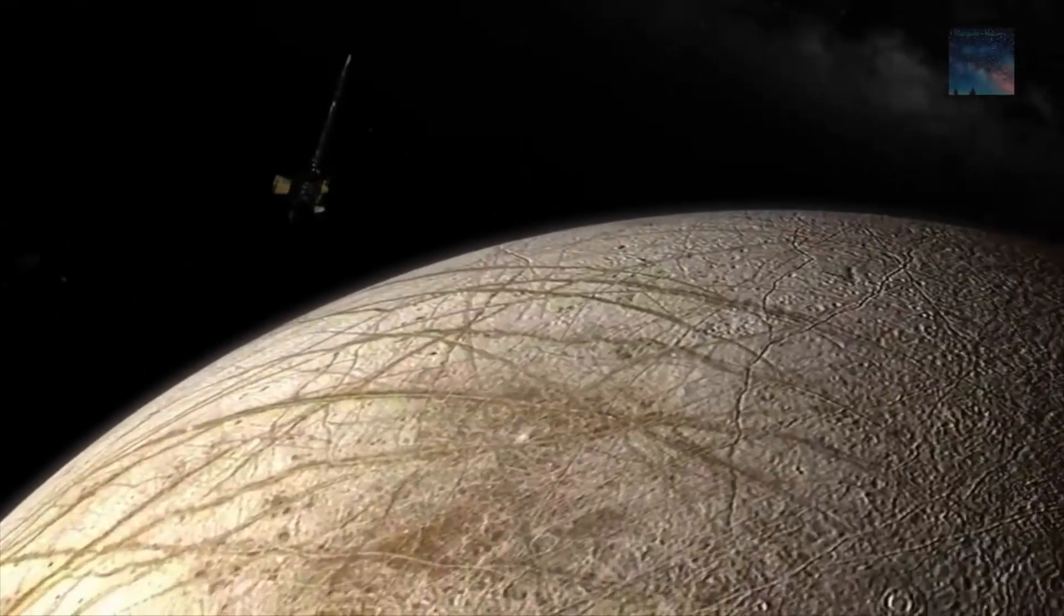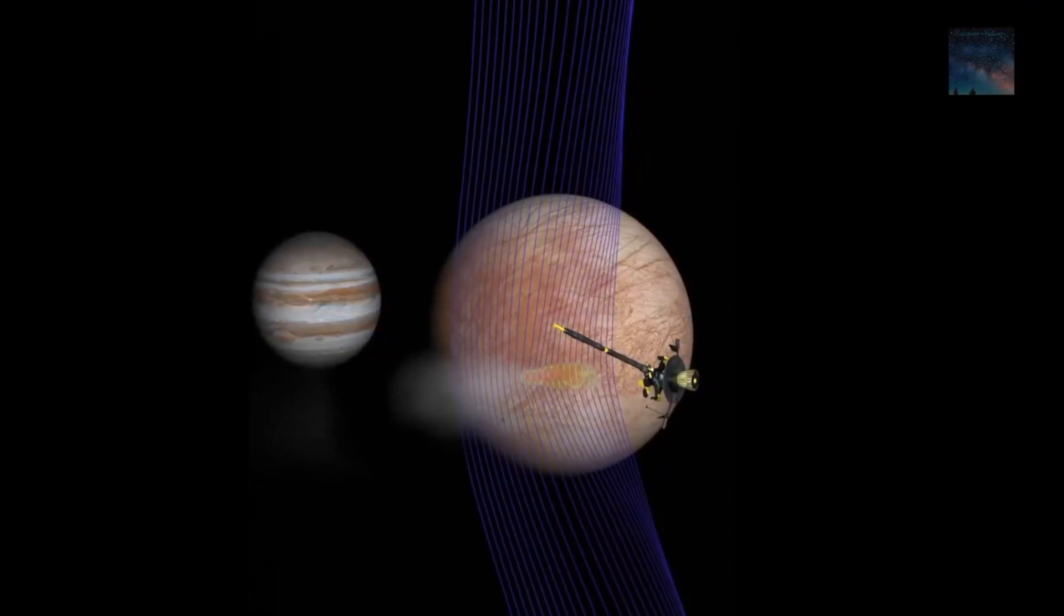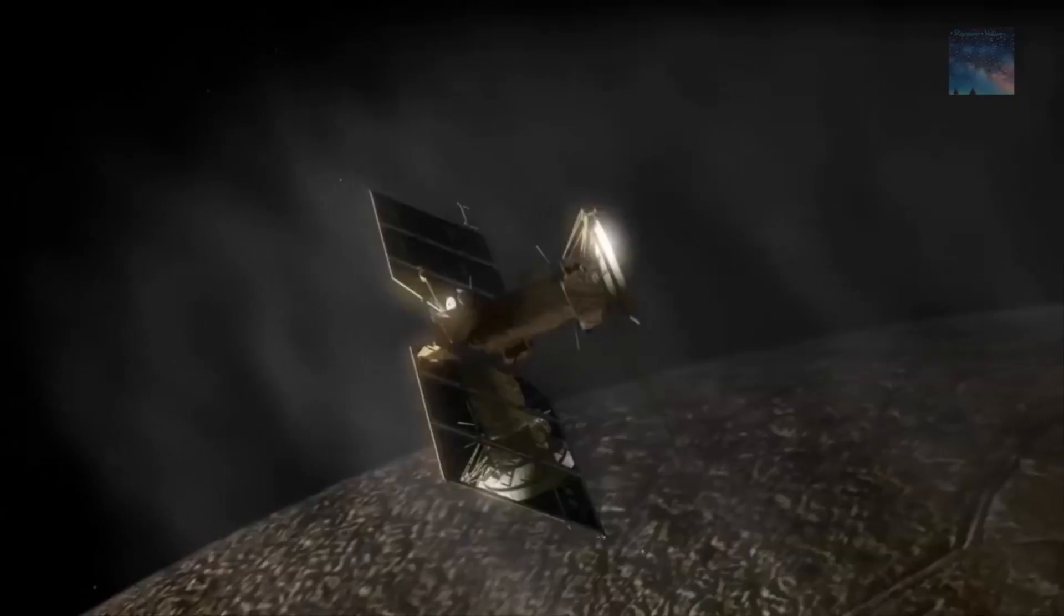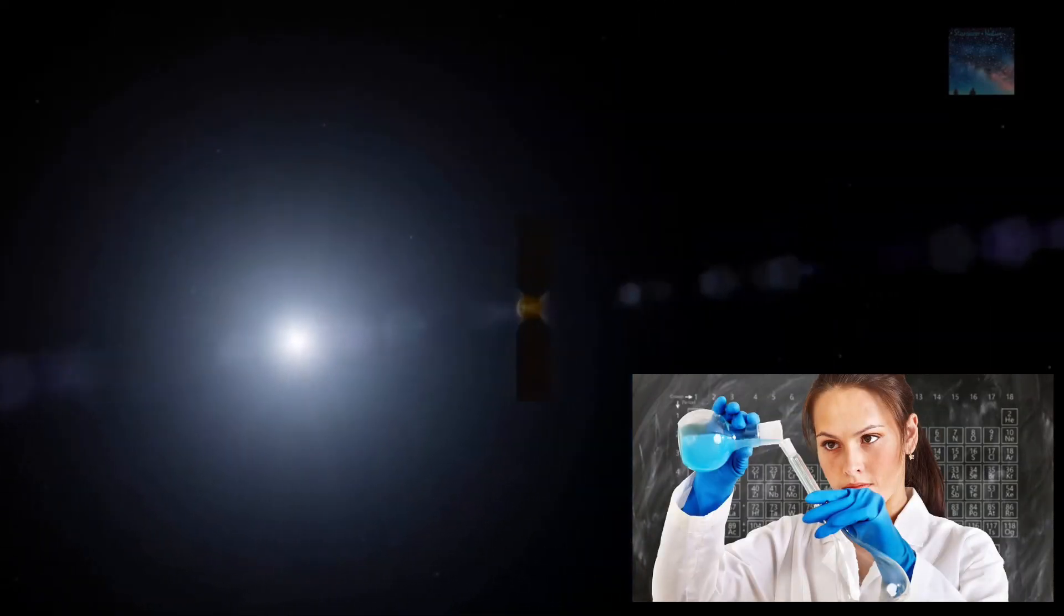But when scientists re-examined data that NASA's Galileo spacecraft had collected back in 1997, they found that a certain bend in Europa's magnetic field was evidence of a leak in the ice crust through which water had spewed forth into the atmosphere. Now that Europa is offering us free lab samples, we'd be crazy not to go back for seconds.